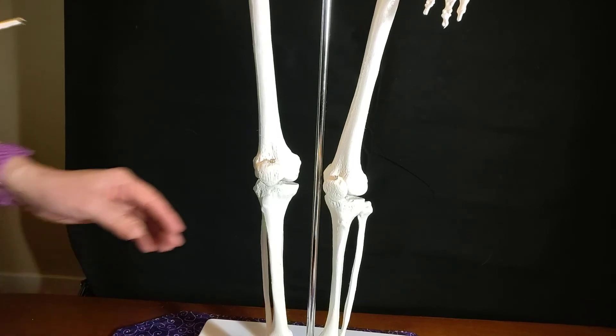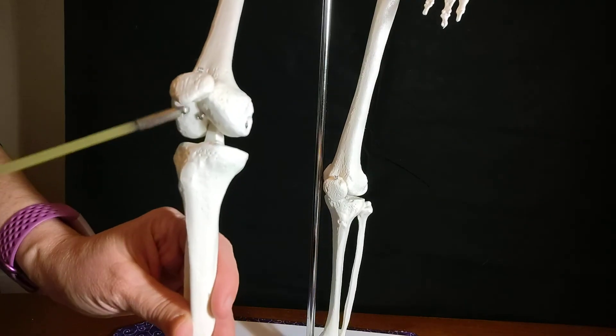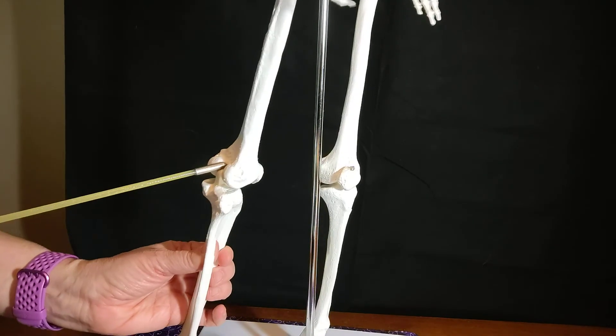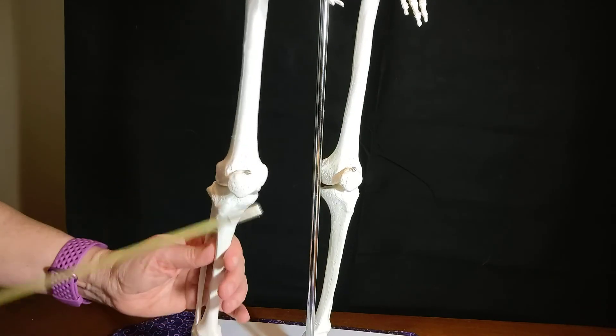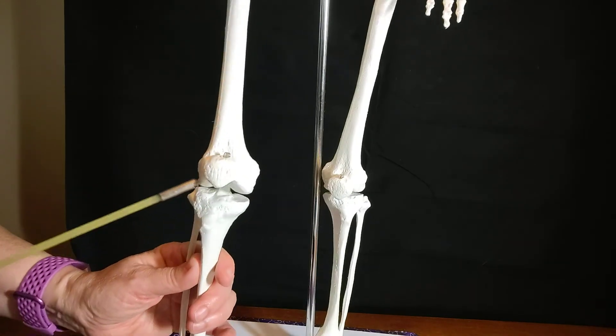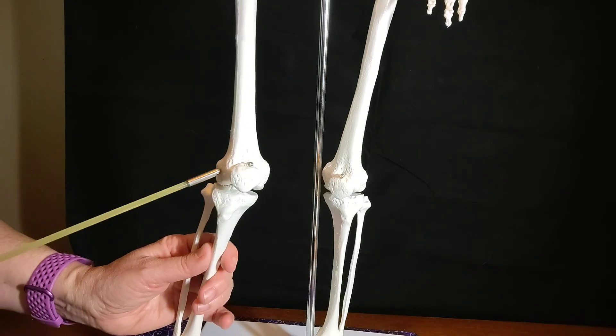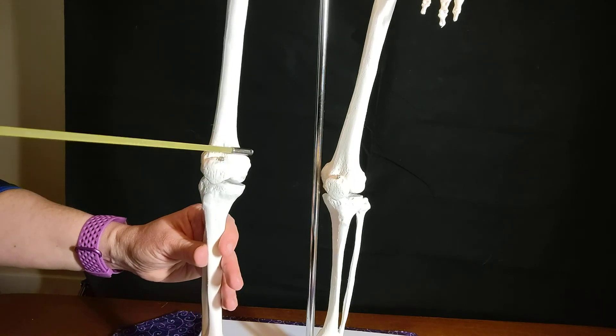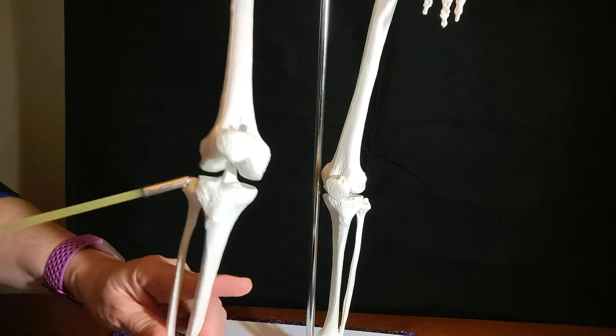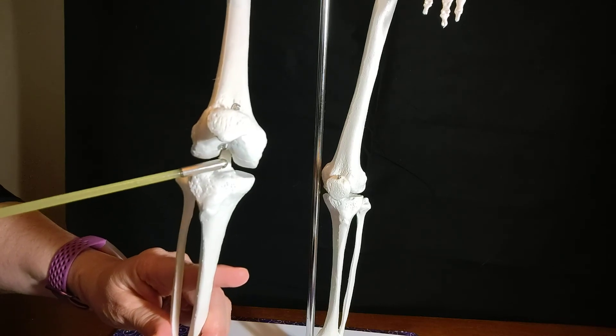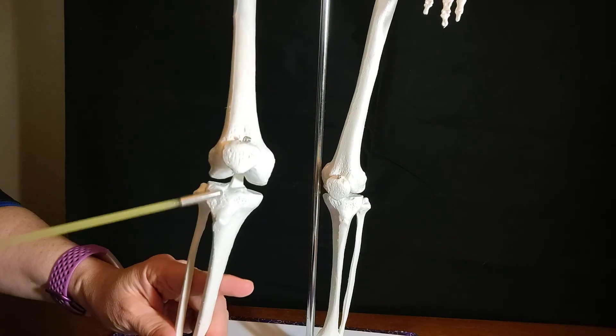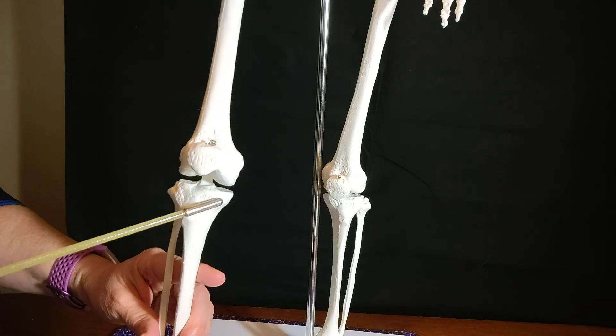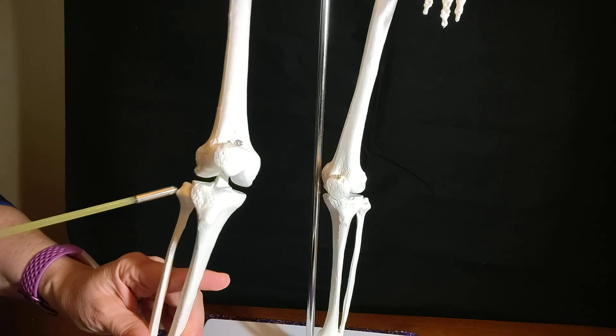So just to review: intercondylar groove, intercondylar notch, lateral condyle right here, medial condyle, lateral epicondyle, medial epicondyle, adductor tubercle - that's from the hip, tibial plateau, the point in the middle is the intercondylar eminence, tibial tuberosity, lateral tibial condyle, medial tibial condyle, fibular head.